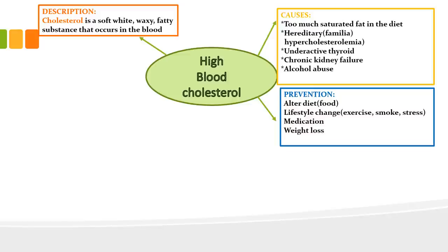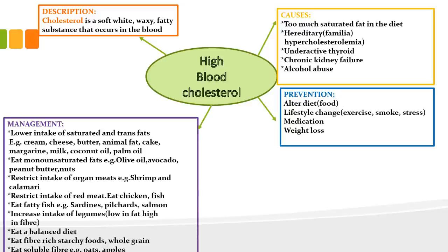You can also prevent high blood cholesterol with medication and by losing weight. Management is very similar to the 11 dietary guidelines. Lower your intake of saturated and trans fats — cream, cheese, butter, animal fat, cakes, chocolates, chips, coconut oil. Eat monounsaturated fats instead — olive oil, avocado, peanuts, nuts. Restrict organ meats, shrimp and calamari. Restrict your intake of red meat, especially visible fat on chops or hidden fat in mince and sausage.